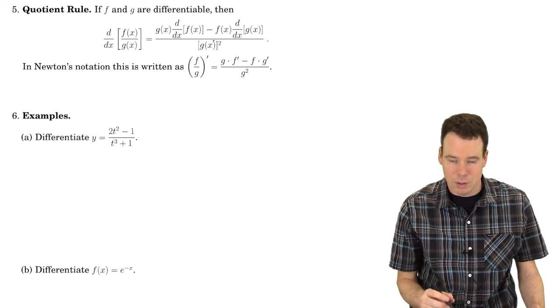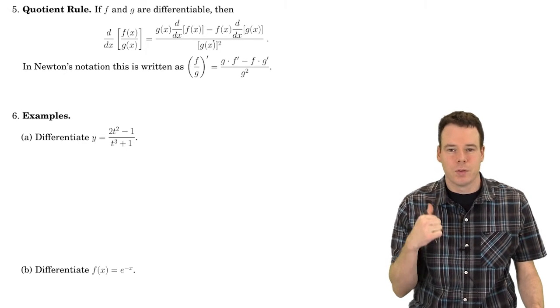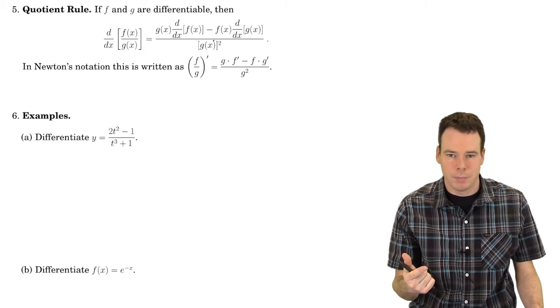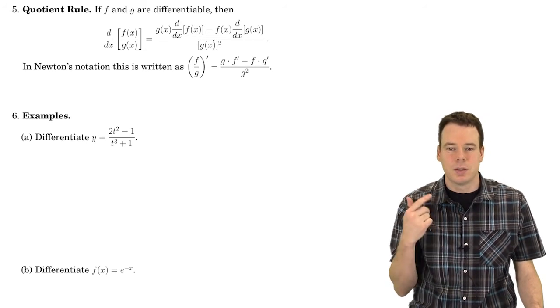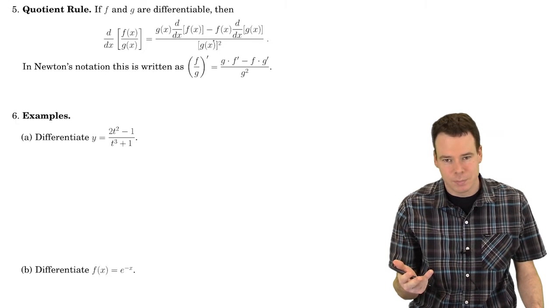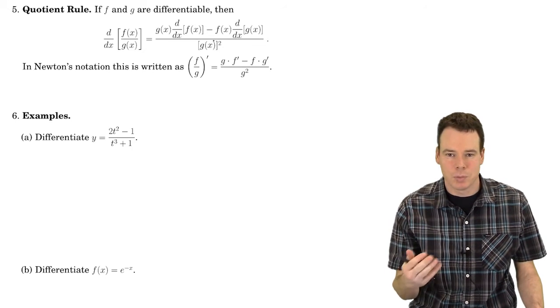So this is how I'm going to think about it: derivative of the quotient equals the derivative of the top times the bottom, minus the top times the derivative of the bottom, all over the bottom squared.